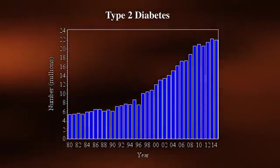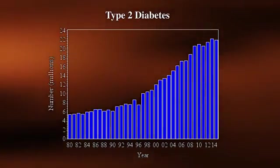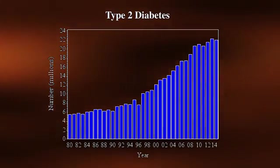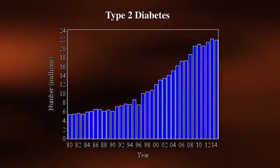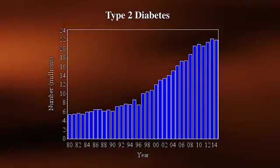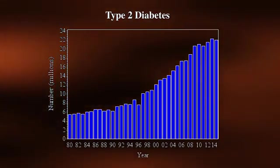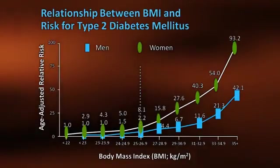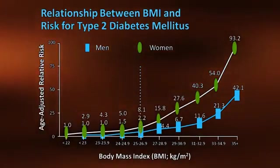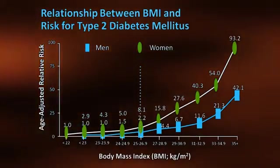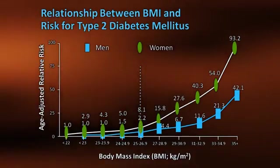The incidence of diabetes has risen exponentially over the past two decades. In the United States alone, approximately 30 million people have diabetes, and another 60 million people are pre-diabetic. Not surprisingly, the prevalence of type 2 diabetes closely tracks that for increasing rates of obesity.